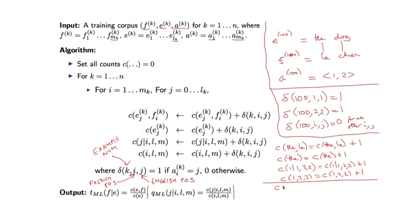You're going to find that c of dog, chien equals c of dog, chien plus 1. c of dog equals c of dog plus 1. And there's a couple more counts here. So actually, 8 counts in total will be incremented for this particular training example.